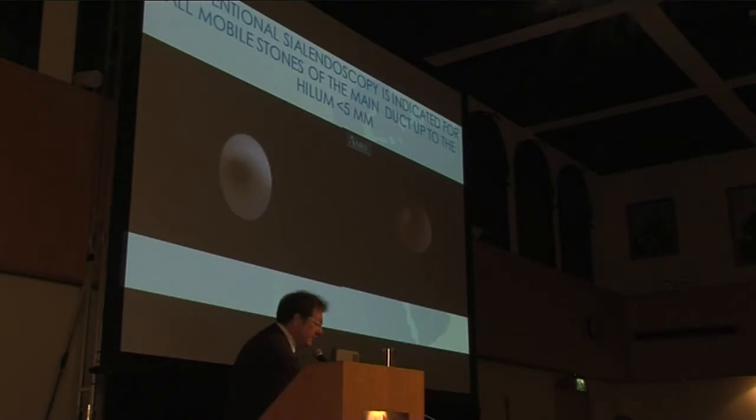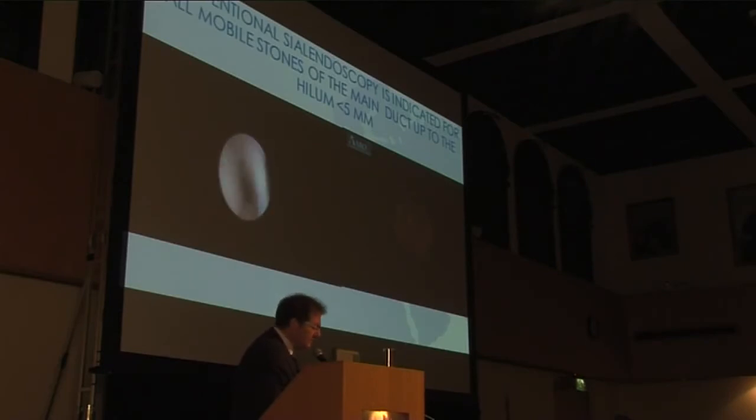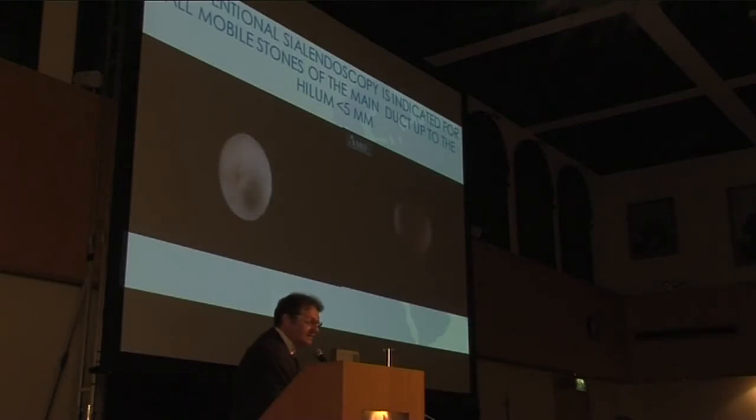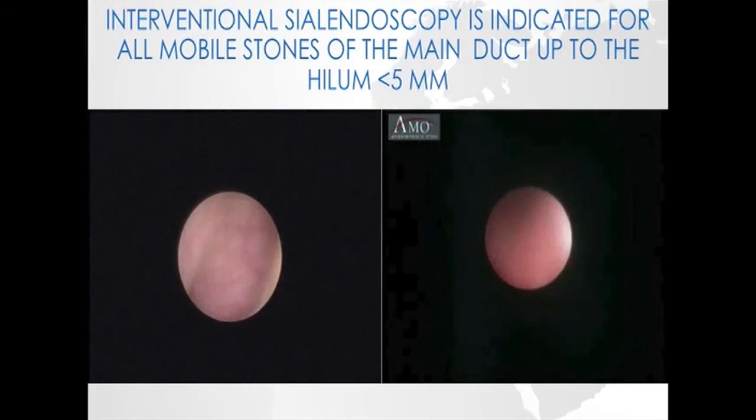With regard to sialendoscopy, interventional sialendoscopy is now indicated in my experience and in published experience for all mobile floating stones of the main duct up to the hilum, less than 5 mm. But we know that sometimes you are able to remove by interventional sialendoscopy also stones that are more than 5 mm — it depends on the shape of the stone and the possibility to get a basket behind the stone. During your procedure you may change strategy from simple interventional sialendoscopy to endoscopically assisted surgical removal.